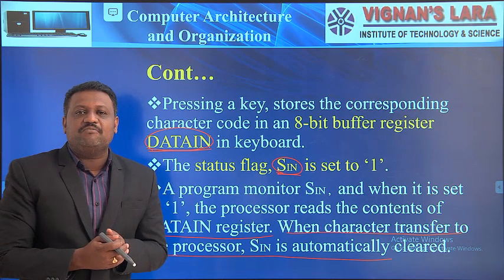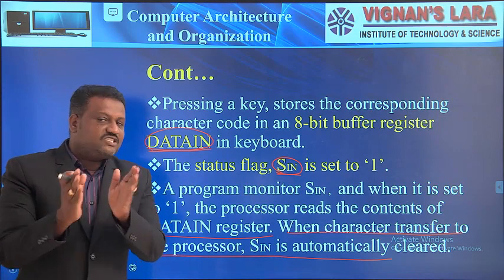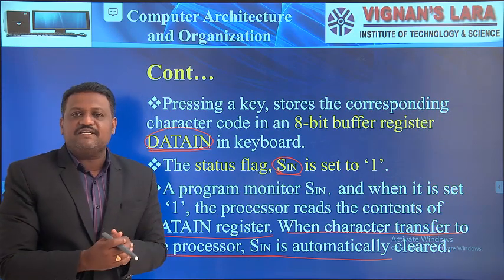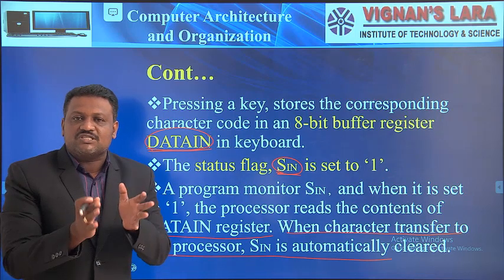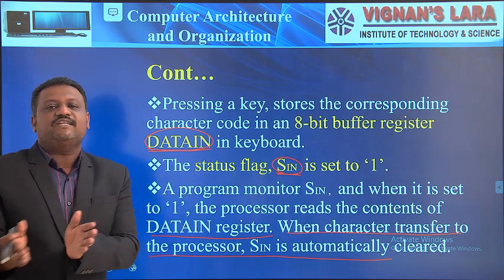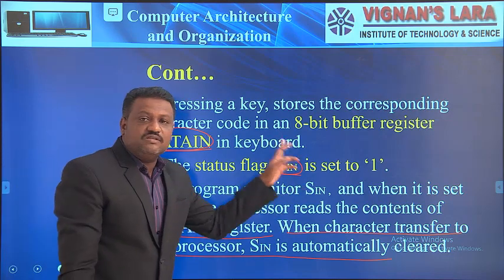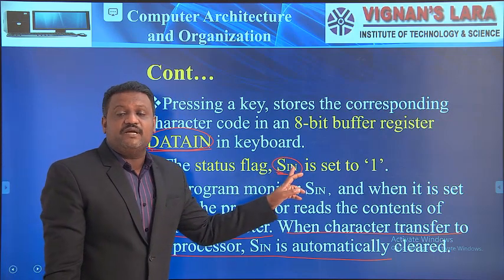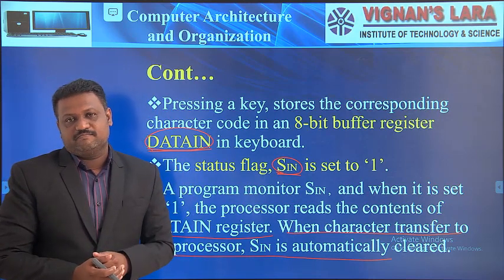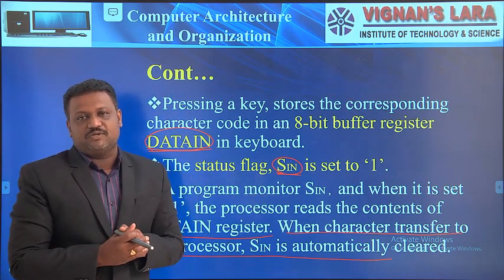Whenever the processor accesses data from an input device, it monitors the S-in bit. If the bit is set to 1, the processor reads the data from the data-in register of the input device. Once the data is successfully transferred to the CPU register, the S-in bit is automatically set to 0, meaning the data-in register is now empty.